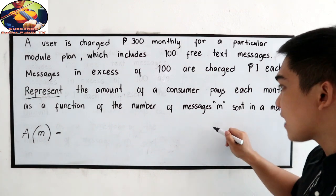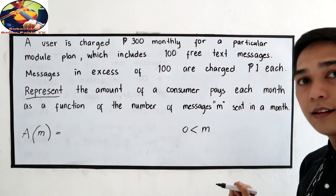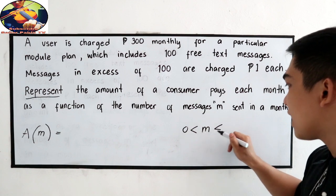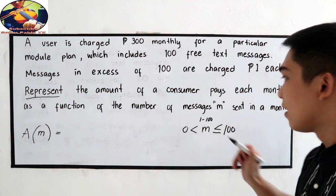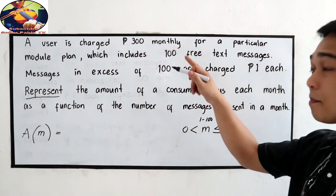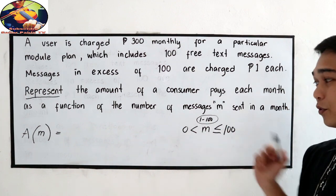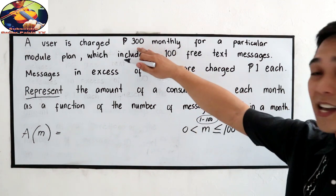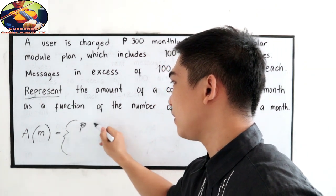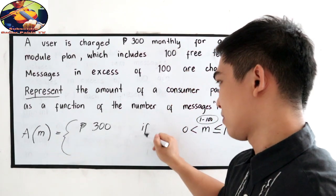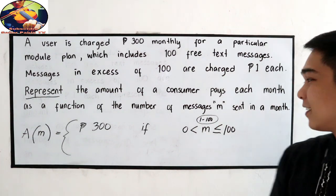For the first condition: if the messages M is greater than 0 but less than or equal to 100 — that is, 1 to 100 — the messages are within the plan. So how much will the consumer pay? It's just the fixed rate of 300 pesos. So A = 300 pesos, if M is between 1 and 100.